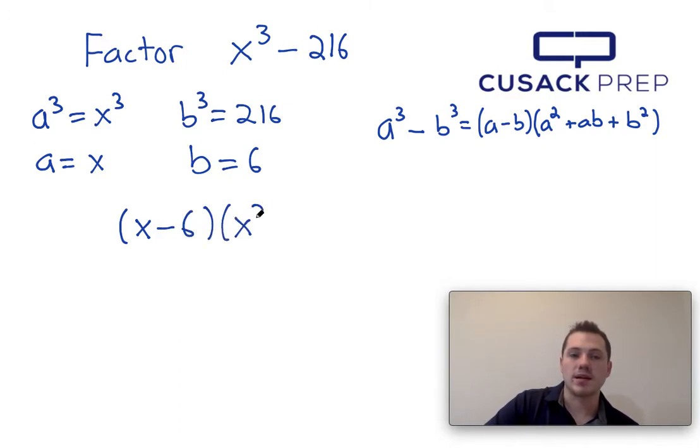A squared plus ab would be x squared plus x times 6 and b squared would be 6 squared. So I can see that this factors into x minus 6 times x squared plus 6x plus 36.